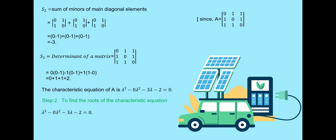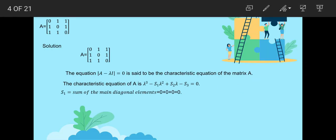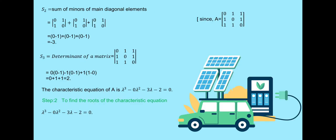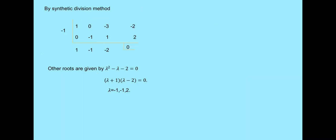Substituting S1, S2, S3 values into the characteristic equation: lambda cubed minus 0 lambda squared minus 2 lambda minus 2 equals 0. Testing lambda equals minus 1: substituting gives answer 0, so lambda equals minus 1 is a root.